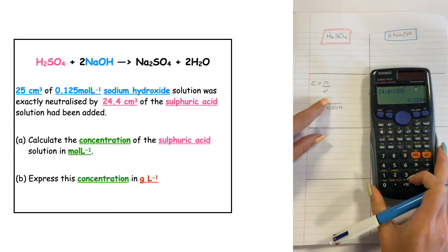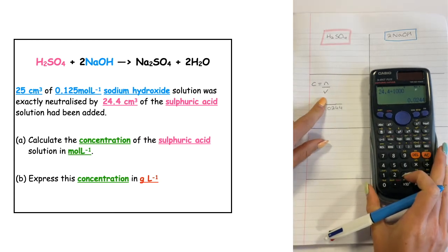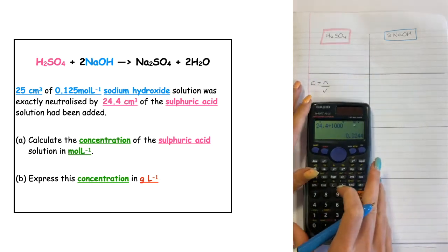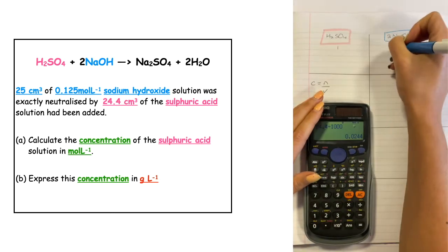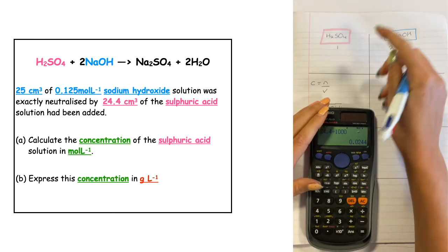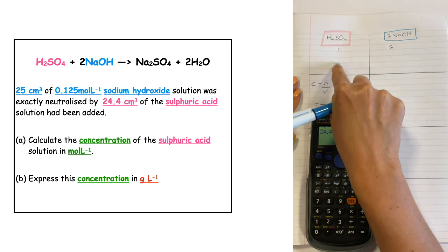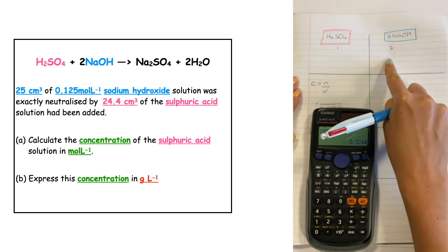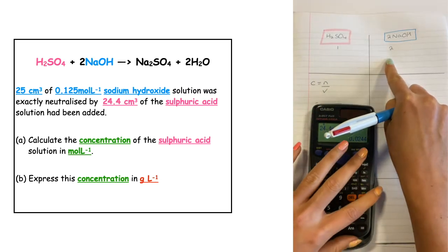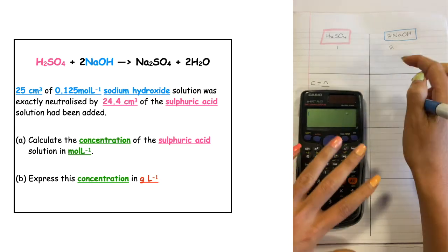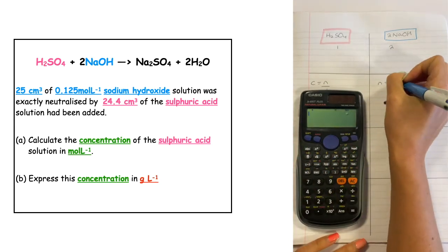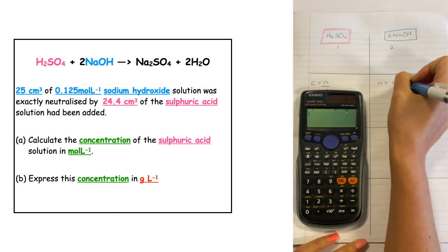To complete this question we need to work out the number of moles, which means we have to look at our mole ratio. The mole ratio from the balanced equation is one to two. To work out the number of moles I actually have, I need to work out the number of moles that reacted with my sodium hydroxide. So we use N is equal to C times V.